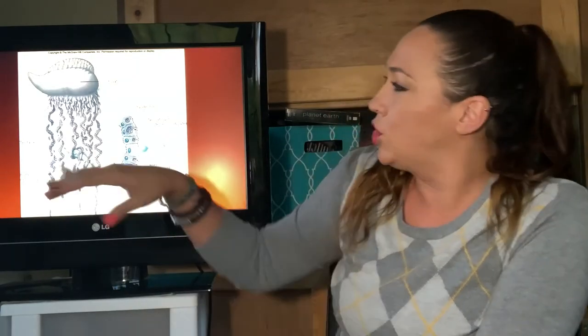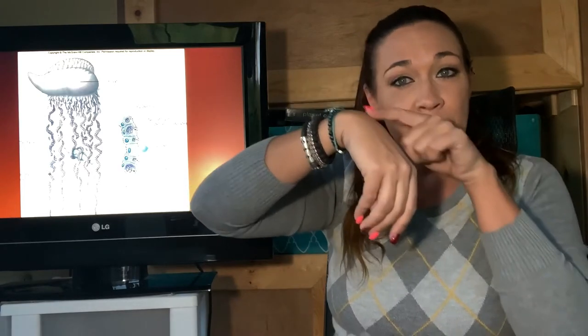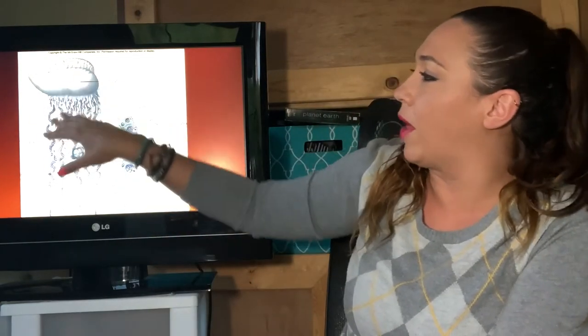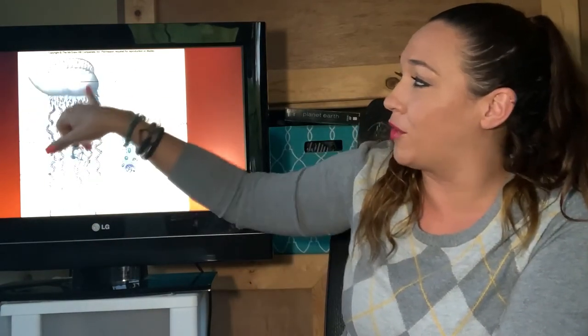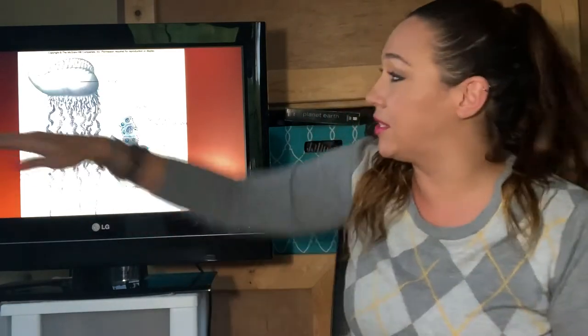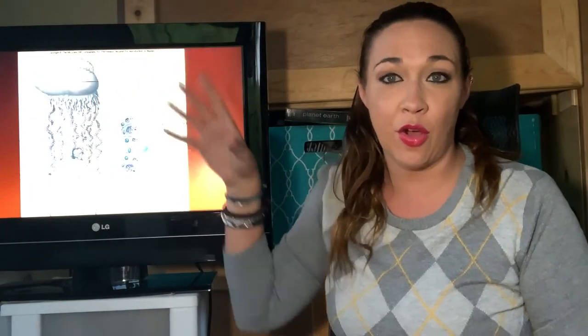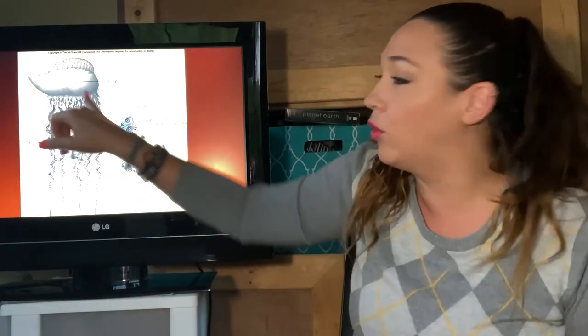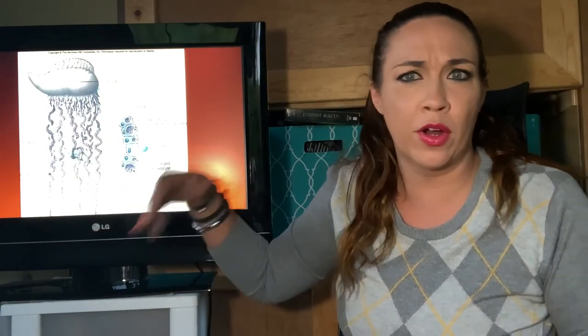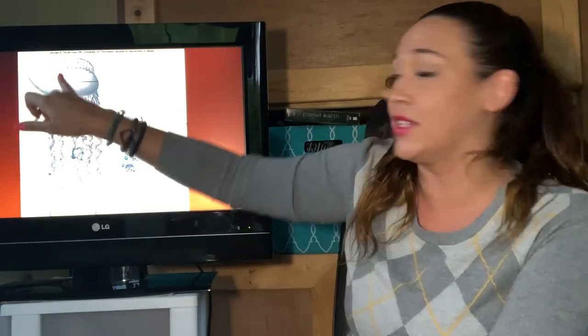This is a modified jelly — the big float on top is known as the bell. In the Portuguese Man of War, that bell has been modified into a gas sack or float, which allows it to sit on the surface of the water and get pushed by the wind. If you're ever in the water near a Portuguese Man of War, stay far away from the bell — the tentacles can extend 10, 12, 15 feet, so you can get stung even if you're nowhere near the bell itself.